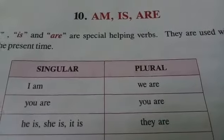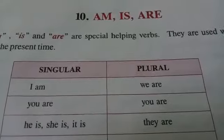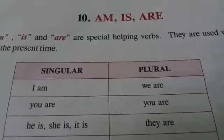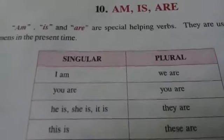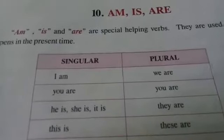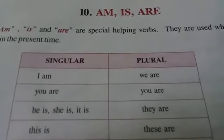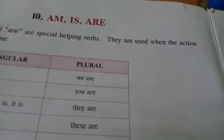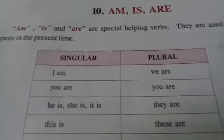You have already learned about pronoun. Let us learn — we use verbs am, is, and are with pronouns. Am, is, and are are special helping verbs. They are used when the action happens in the present time.